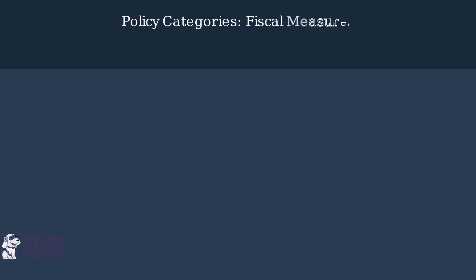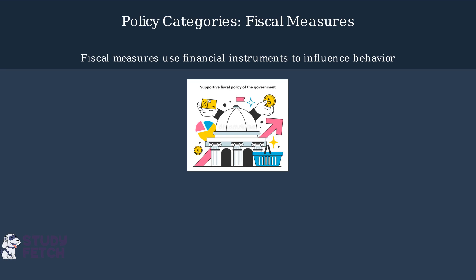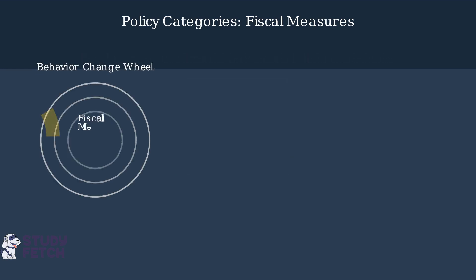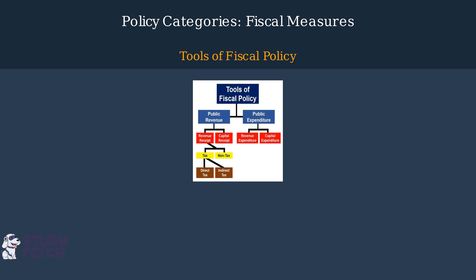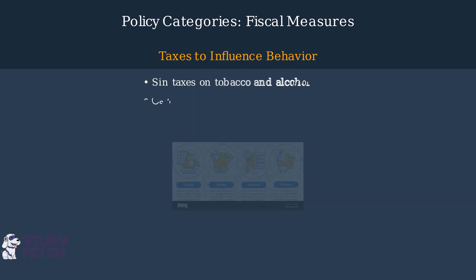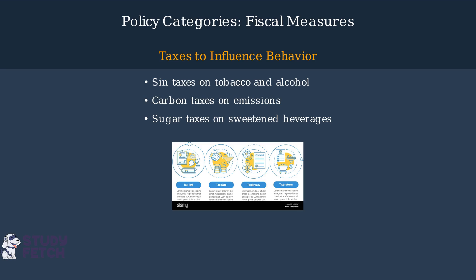Fiscal measures form a key policy category in the outer wheel of the behavior change wheel. These measures use the tax system and other financial instruments to influence or control behavior. Fiscal policy tools include both revenue collection through taxation and government expenditure, and can be strategically designed to encourage or discourage specific behaviors. Taxes are commonly used to discourage unhealthy or environmentally harmful behaviors—examples include sin taxes on tobacco and alcohol, carbon taxes on emissions, and sugar taxes on sweetened beverages.